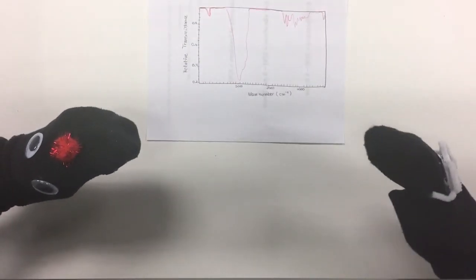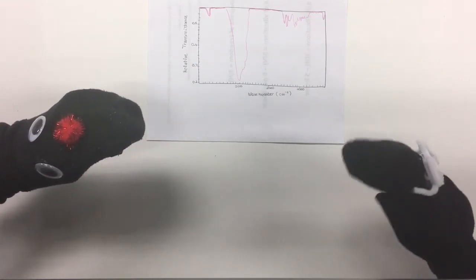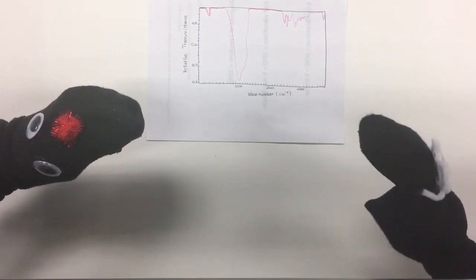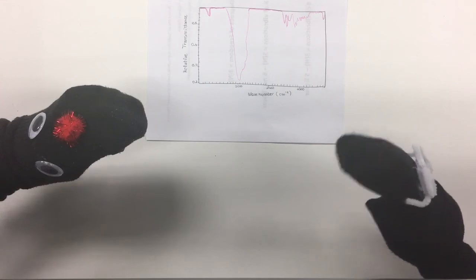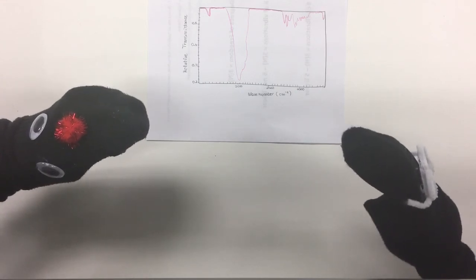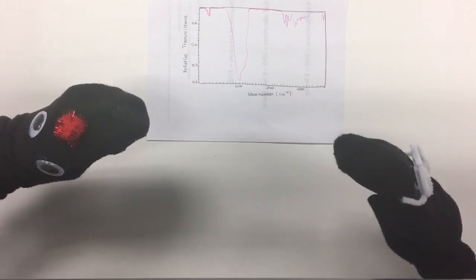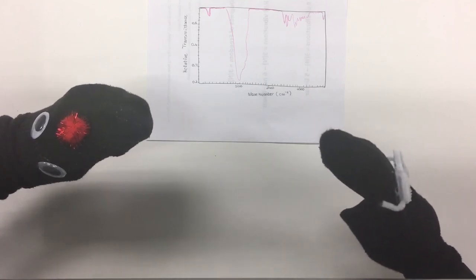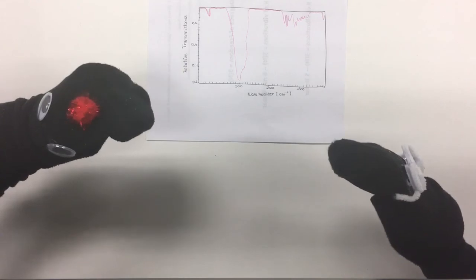So in my spectrum, I have a broad band at 3000 which represents the alcohol functional group. For some reason I thought my product was 2-butanone, but the presence of the OH band instead of the C double bond O band proves that it's really 2-butanol. Thanks, red nose puffs. You're welcome, glasses puppet.